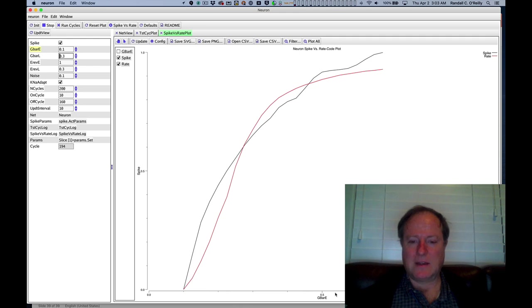Now we can compare directly the spike versus rate by running this spike versus rate plot. And here you can see on the x-axis we're plotting the different levels of excitation ge that we're putting into the cell, and on the y-axis both the rate of spiking empirically, as measured by the interval between those spikes.